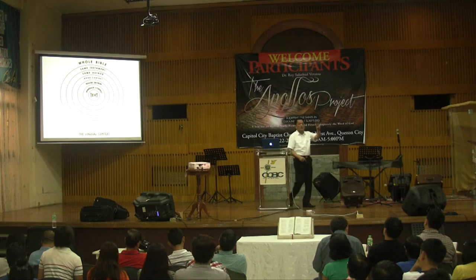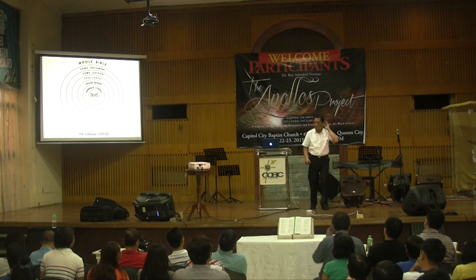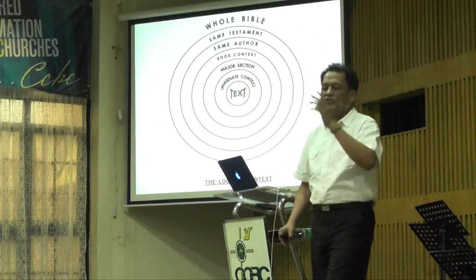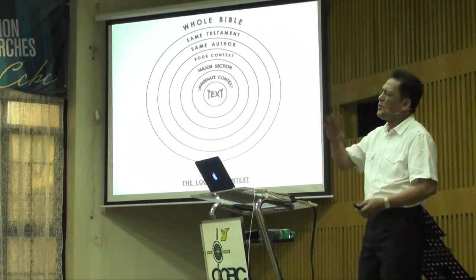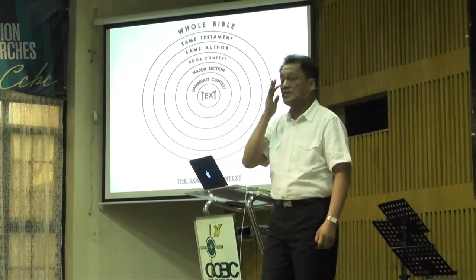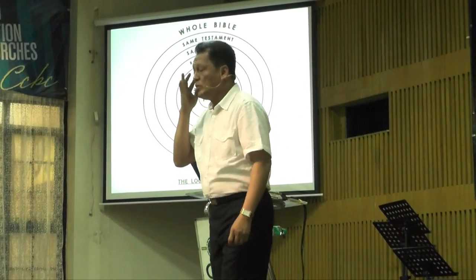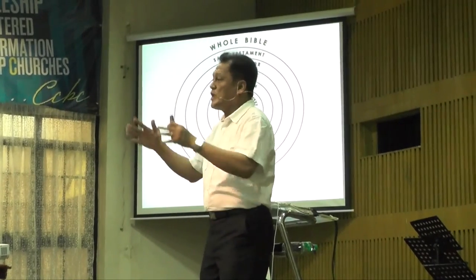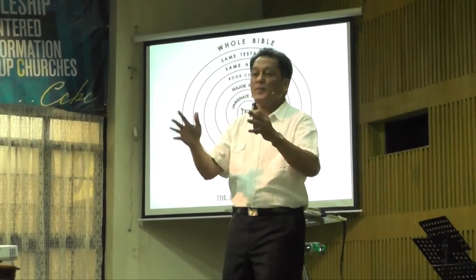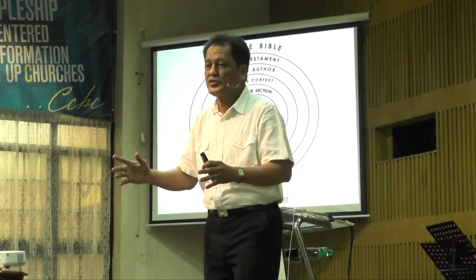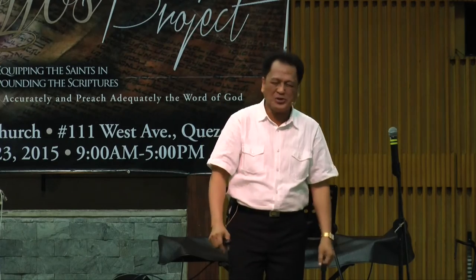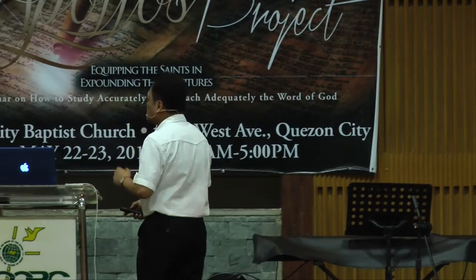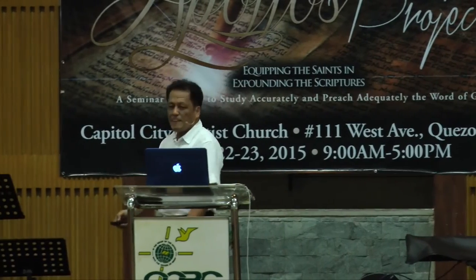Two most important words when it comes to interpretation: context rules. You can be a topical preacher — no problem — as long as you're in context. The rule for expository preachers: you can preach a topical sermon once every five years, repeat, and repent immediately. But again, it's okay as long as you consider the context.